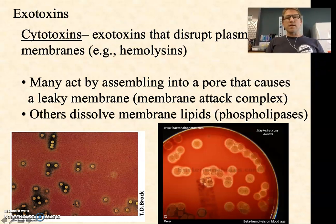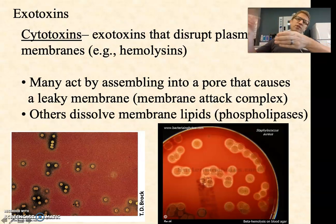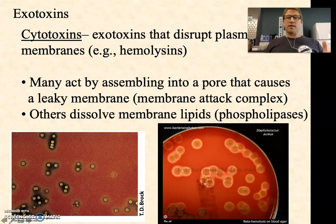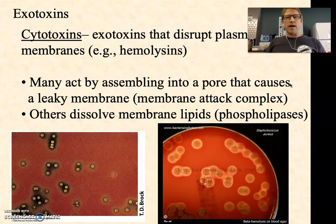There are two main ways we see cytotoxins functioning. Some form a pore called a membrane attack complex, where copies of the protein polymerize together forming a tube or channel — a barrel that sits in the membrane — making it leaky so nutrients rush out and water rushes in due to solute gradients, ultimately causing the cell to burst open. Others are specifically phospholipase enzymes that degrade phospholipids until the cell can't repair itself and membrane integrity is compromised enough that the cell bursts open as well. In either case, you end up with cellular contents released for the bacteria to feed on, causing damage to the patient.